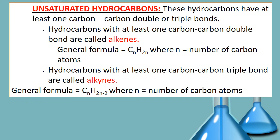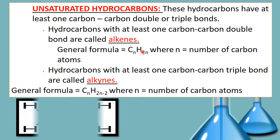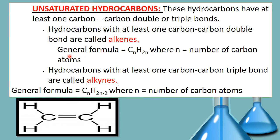Hydrocarbons with at least one carbon-carbon double bond are called as alkenes. Alkenes follow a general formula and that is CnH2n. Where N is the number of carbon atoms.